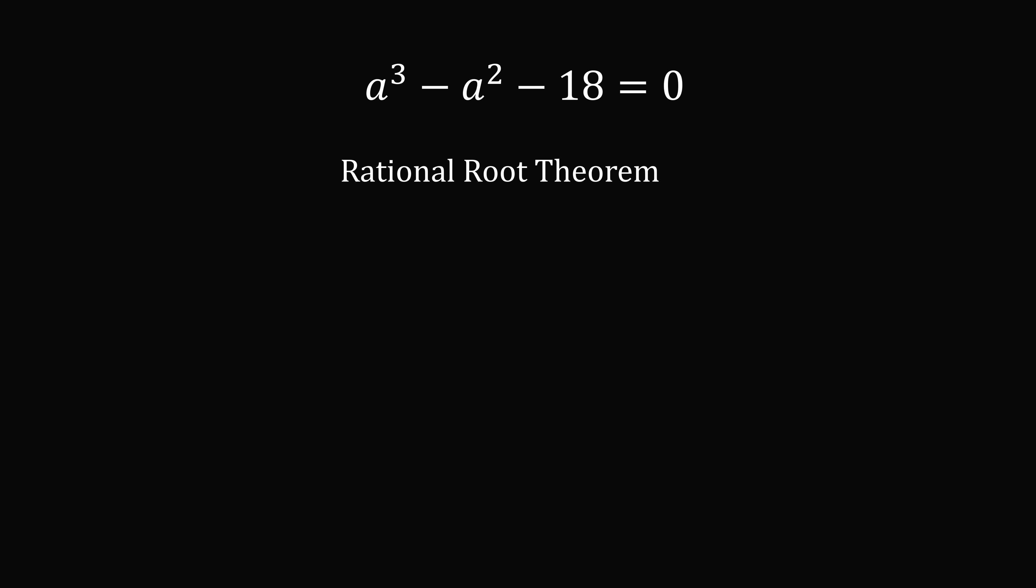So what this states is you want to look for particular candidates which will be rational roots of this polynomial. Here's how it works. You take a look at the constant coefficient which is 18 and then you take a look at the coefficient of the highest power. In this case, we want to take a look at the coefficient of a cubed, which is 1. So the candidates for roots of this polynomial will be plus or minus factors of the constant term 18 divided by factors of the leading coefficient 1.